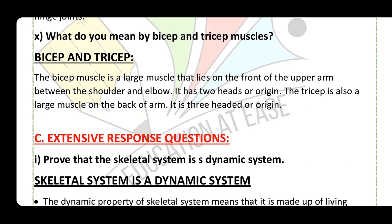Question: what do you mean by bicep and tricep muscles? The bicep muscle is a large muscle on the front of the upper arm between the shoulder and elbow, with two heads at its origin. The tricep muscle is large, present at the back of the arm, and has three heads at its origin.